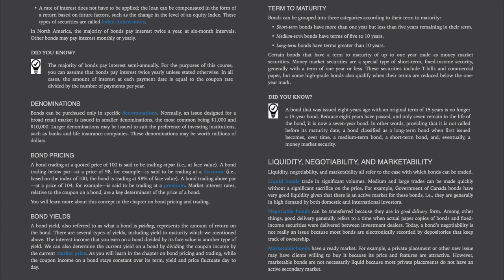Bond pricing: a bond trading at a quoted price of 100 is said to be trading at par or face value. A bond trading below par — at a price of 98, for example — is said to be trading at a discount, meaning it is trading at 98% of face value. A bond trading above par — at a price of 104, for example — is said to be trading at a premium. Market interest rates relative to the coupon on a bond are a key determinant of the bond's price.